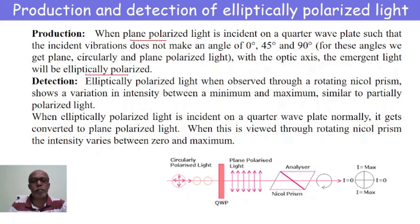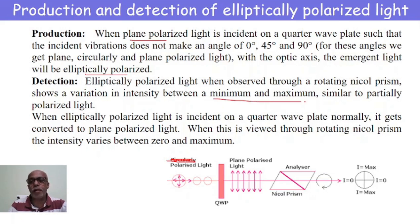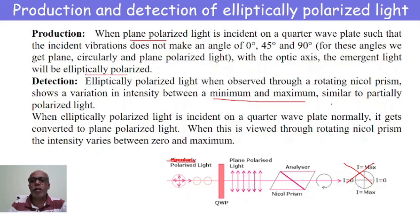In order to detect elliptically polarized light, we pass the elliptically polarized light through a rotating Nicol prism. When observed through a rotating Nicol prism, the intensity varies between minimum and maximum — not zero and maximum, as in the case of circularly polarized light. If the intensity of light emerging out of the rotating Nicol prism varies between minimum and maximum, then the light is said to be elliptically polarized.